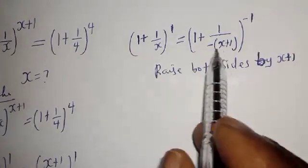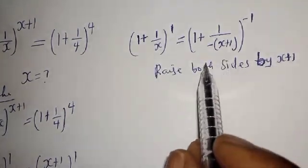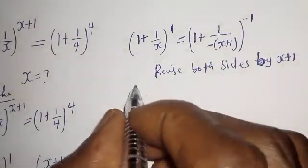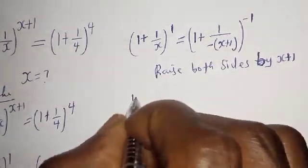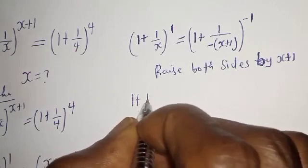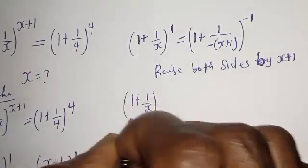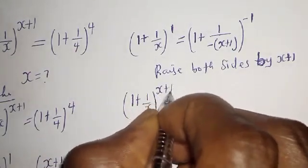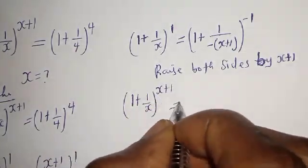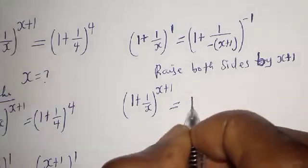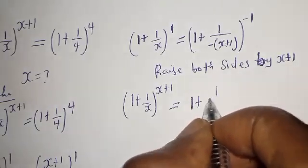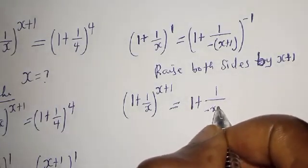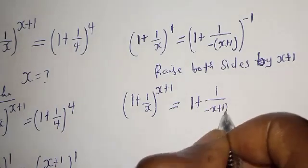From here, let's raise both sides by s plus 1. That is, 1 plus 1 over s, to the power of s plus 1, is equal to 1 plus 1 over minus s plus 1, to the power of s plus 1.